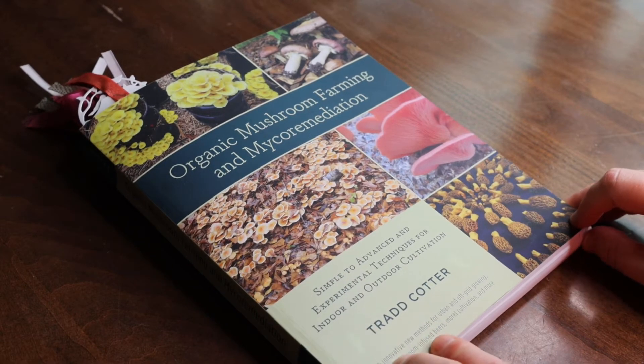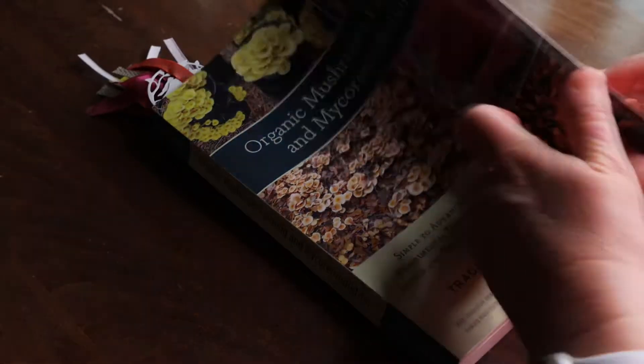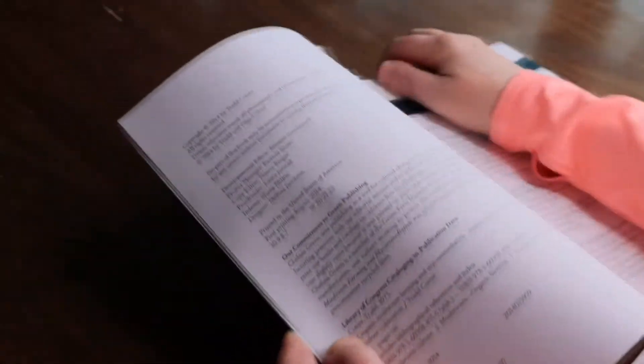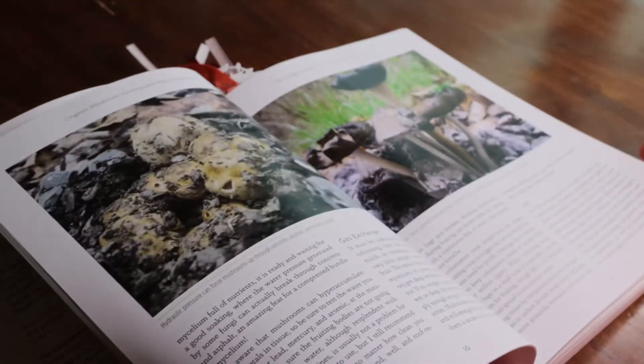And this Organic Mushroom Farming and Mycoremediation by Trad Cotter is one that I do recommend. It was written in 2014, so it's a fairly recent book. It's got lots of colorful pictures and great illustrations in it.